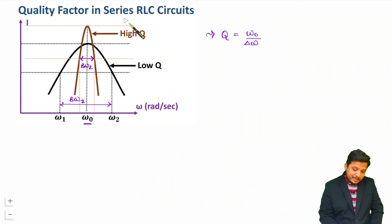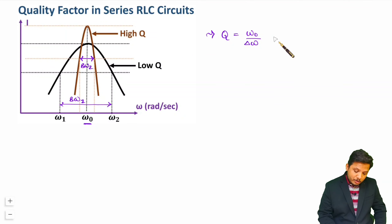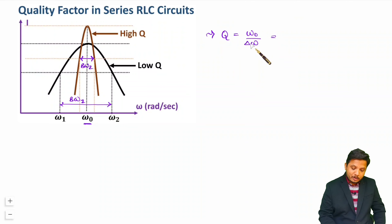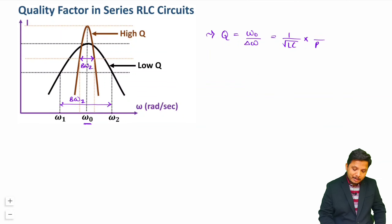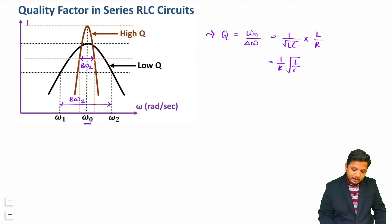Now for the series RLC circuit, let us identify what this quality factor is. For a series RLC circuit I have already derived both formulas: omega 0 equals 1 by square root of LC, and delta omega equals R by L. So if you simplify this, the square root of L gets cancelled and in the numerator there will be a square root. You will be left with quality factor equals 1 by R into square root of L by C.